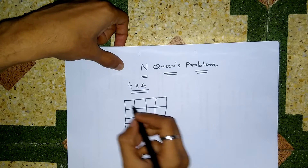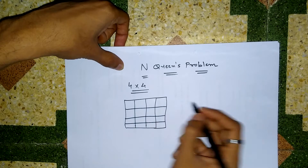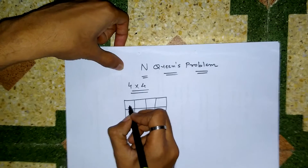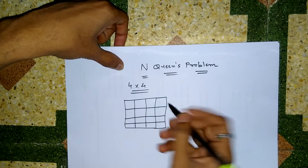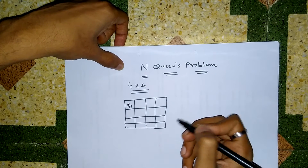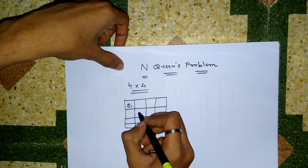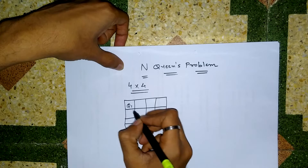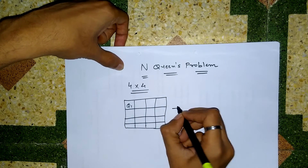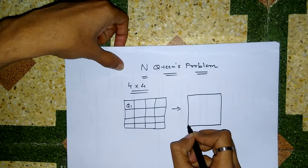A queen can attack row-wise, column-wise, or diagonally. So we can put the first queen anywhere. When we place the second queen, we cannot place it in the same row, column, or diagonal as Q1. We have to place Q2 in such a manner that these two queens cannot attack each other.